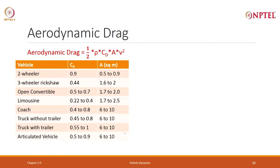That is the amount of air it must cut, and therefore that much force must be applied. The drag coefficient is 0.9 for a two-wheeler, 0.44 for a three-wheeler. For cars it is more like 0.5 to 0.6. For a limousine it is less — 0.22 to 0.4. For a coach, between 0.4 and 0.8. You have to figure out these two numbers, and I have given typical values we will use in our work.